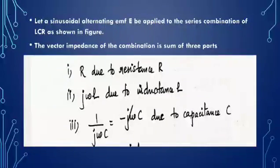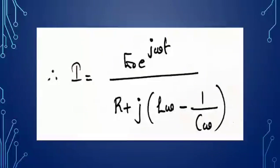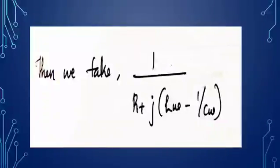The vector impedance of the combination is the sum of three parts: R (resistance due to resistor R), jωL (inductive reactance due to inductance L), and 1/(jωC) (due to capacitance C). So the current I equals the applied EMF divided by the vector impedance: I = E₀e^(jωt) divided by [R + j(ωL − 1/ωC)].